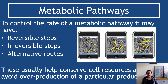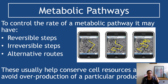To control the rate of a metabolic pathway is absolutely crucial. If you think about yourself, if you were doing far too much respiration or not enough respiration, the impact on your body would be really bad. So there are reversible steps, irreversible steps, and alternative routes. They help conserve cell resources and avoid overproduction of a particular product. In some cases, they also ensure that if you run out of a raw material, there's an alternative that can be used, or if one pathway is overwhelmed, an alternative route can be used to avoid too much buildup.